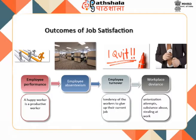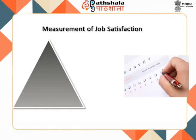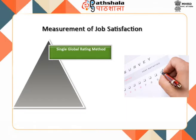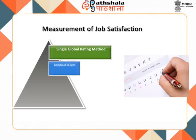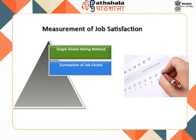There are several measures of job satisfaction. The Single Global Rating Method asks individual employees to respond to one question such as, 'All things considered, how satisfied are you with the job?' Respondents circle a number between one and five, from highly satisfied to highly dissatisfied. Another method is the Summation of Job Facets, in which typical factors — the nature of work, supervision, present pay, promotional opportunities, and relations with co-workers — are rated on a standardized scale and added up to create an overall job satisfaction score.